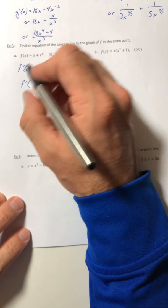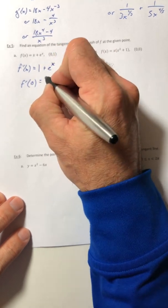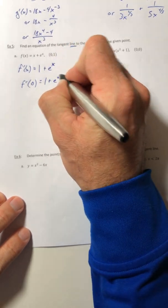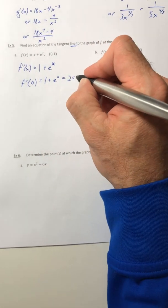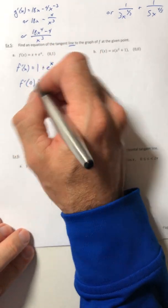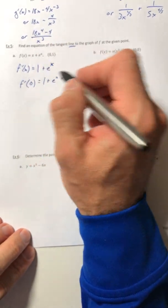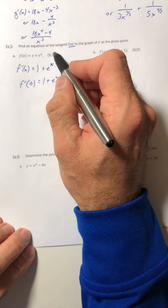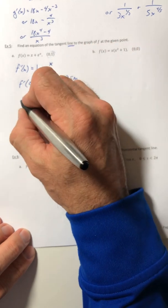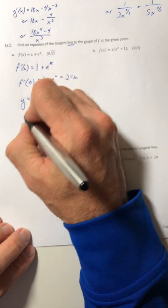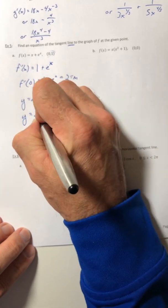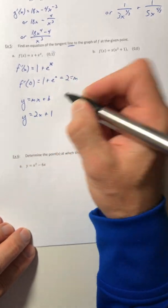Plug in the x value of the point and we get two, so that is your slope. You can use point slope formula or realize hey, you've got the y-intercept right here, so you could just use y equals mx plus b. So 2x plus 1.